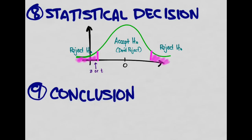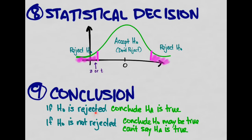If the test statistic falls in the rejection region, we reject the null hypothesis. If it falls within the don't-reject region, we accept the null hypothesis. If H0 is rejected, we say we have evidence to support our alternative hypothesis. If we are unable to reject the null hypothesis, then we say the null hypothesis may be true and we cannot say that our alternative hypothesis is true.